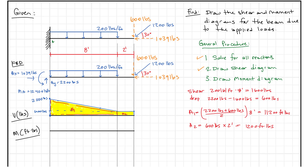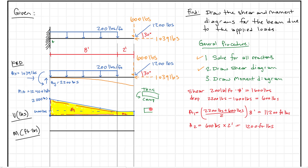It's important to understand the moment diagram sign convention. When we think of this beam deflecting down, we have tension on the top and compression on the bottom. Our positive sign convention says a moment on the left side of a cut causes tension on the bottom and compression on the top. A negative moment is the opposite — tension on top, compression on the bottom. For a cantilever beam deflecting down like this one, tension on top and compression on the bottom matches our negative sign convention. So we are going to call this a negative moment.